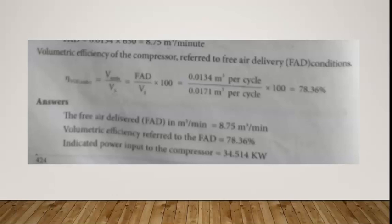The three final answers are: first, free air delivery (FAD) equals 8.75 m³ per minute; second, volumetric efficiency referred to FAD conditions equals 78.36%; and third, indicated power input to the compressor equals 34.514 kW.